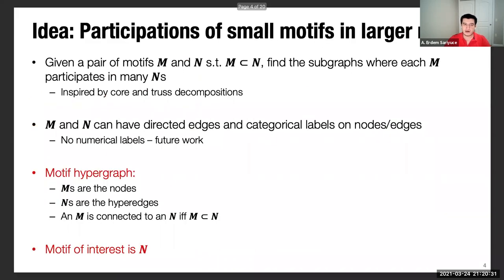Our idea is to look at the participations of small motifs and larger motifs. To formalize this, we consider a pair of motifs, M and N. I'm going to call small and large motifs for those two. M is always a subset of N. And we find the subgraphs where each M participates in many Ns.